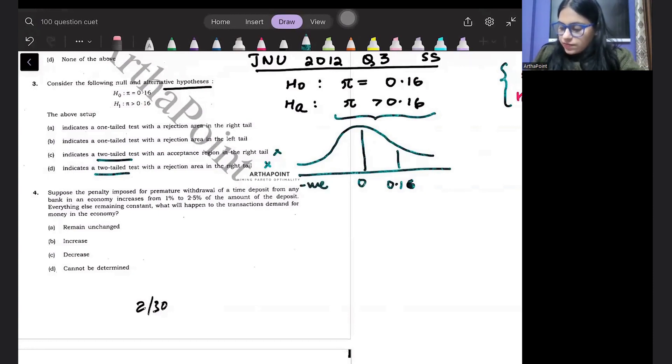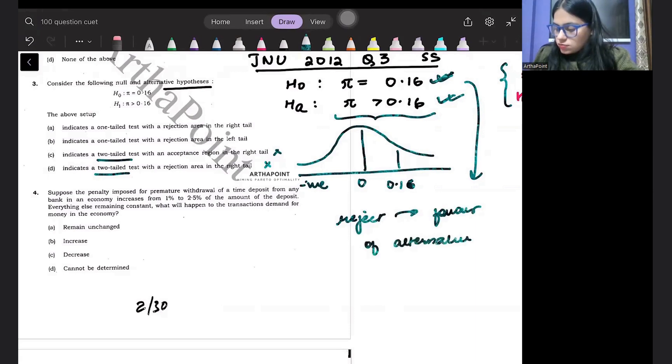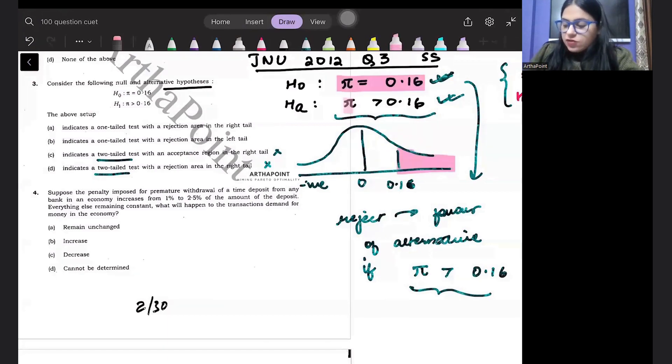I am going to go ahead and I'm going to reject null in favour of alternative if I will have μ π greater than 0.16. Agar pi 0.16 se greater hai, only then I will reject null in favour of alternative. Otherwise, I will not reject null in favour of alternative.